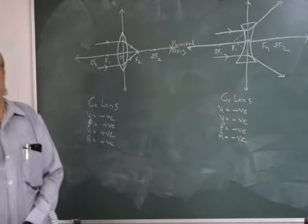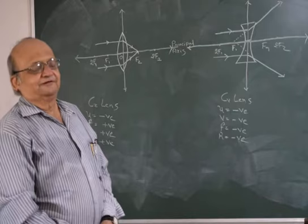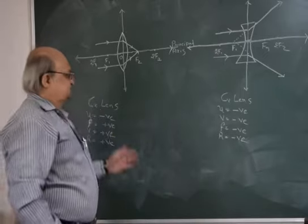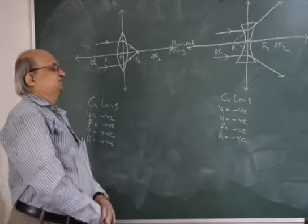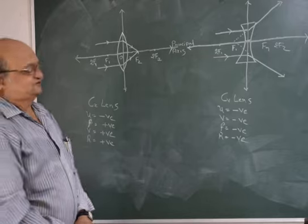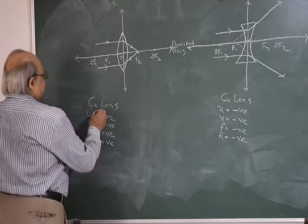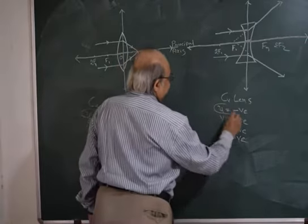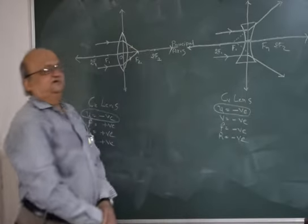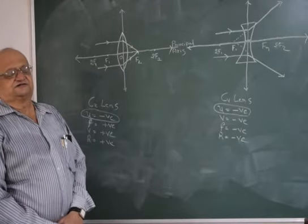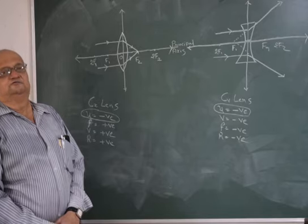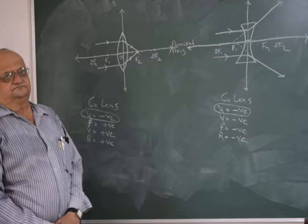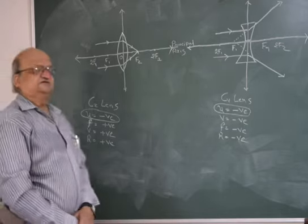Now if you look at the tables for convex mirror, concave mirror, convex lens, and concave lens, you will find that the object distance in every case is negative. Remember — object distance will always be negative. The other quantities vary.